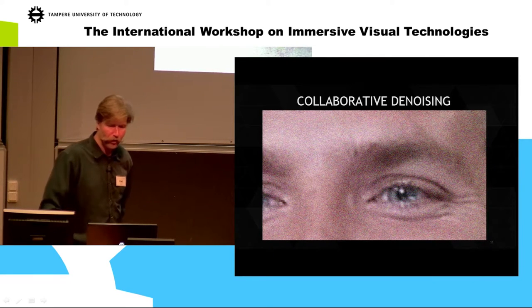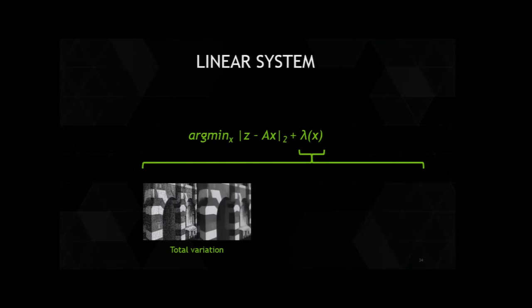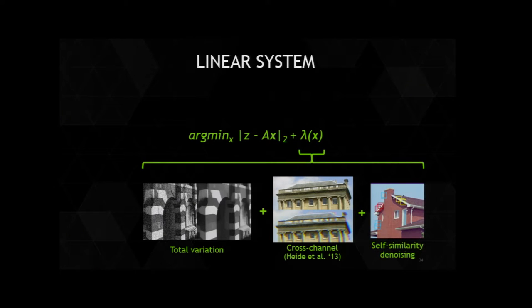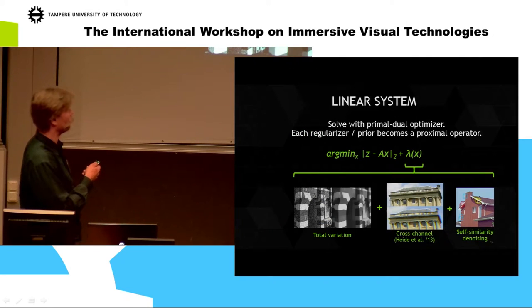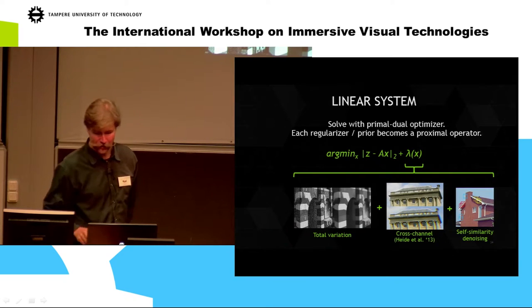And finally we use collaborative denoising based on self-similarity: small patches in an image have neighboring patches that are quite similar, and looking at them together enables better denoising. These three regularizers — total variation, cross-channel, and self-similarity — are solved with a modern primal-dual optimizer. The individual components become proximal operators that are fast to evaluate and give good results.